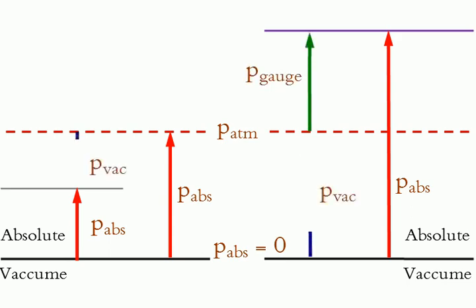Pressures below atmospheric pressure are called vacuum pressures and are measured by vacuum gauges that indicate the difference between the atmospheric pressure and the absolute pressure.